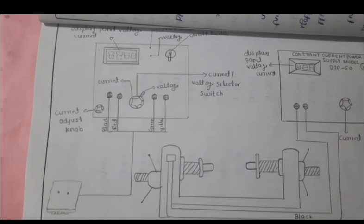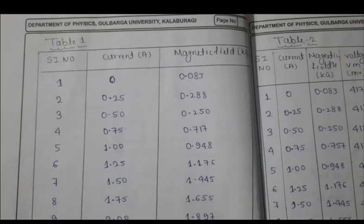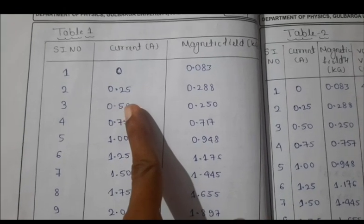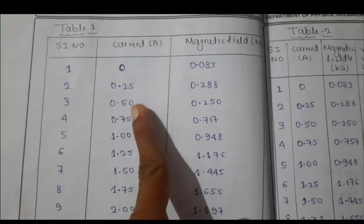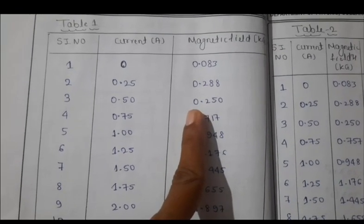So here are the tabular columns. First we have to apply the current and note down the corresponding magnetic field in the gauss meter.